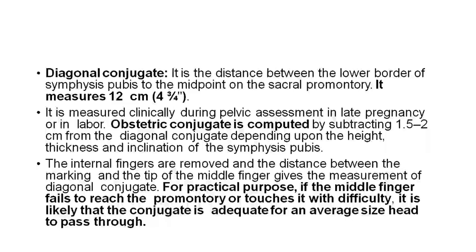Diagonal conjugate is the distance between the lower border of the symphysis pubis to the midpoint of the sacral promontory; it measures nearly 12 cm. It is measured clinically during pelvic assessment in late pregnancy or in labor. The obstetric conjugate is computed by subtracting 1.5 to 2 cm from the diagonal conjugate depending upon the height, thickness, and inclination of the symphysis pubis. The distance between the marking and the tip of the middle finger gives the measurement of the diagonal conjugate.